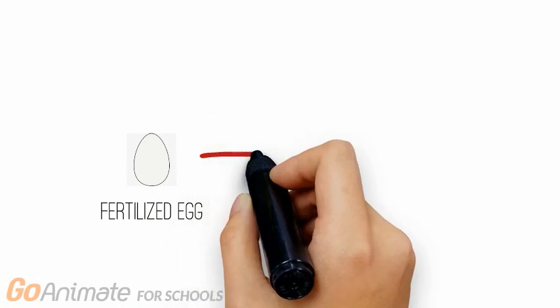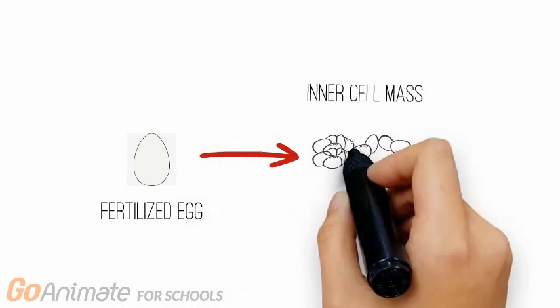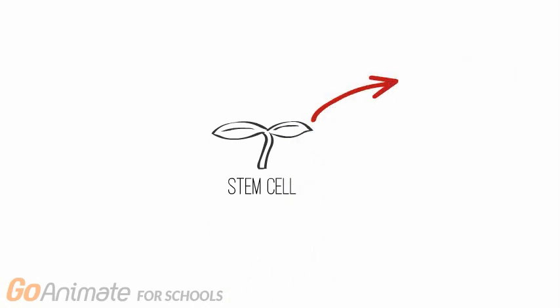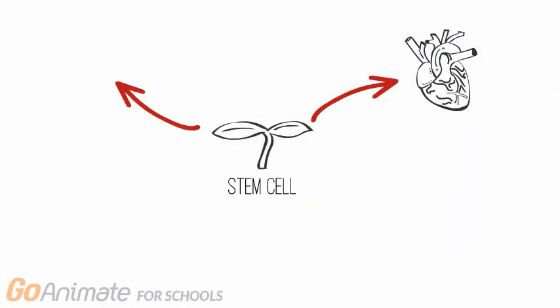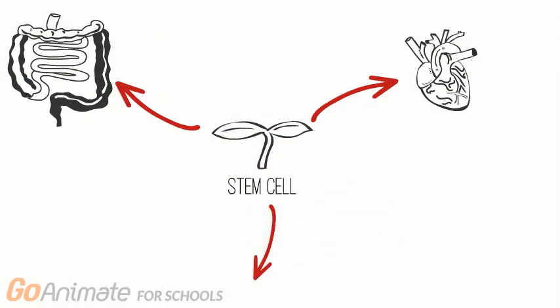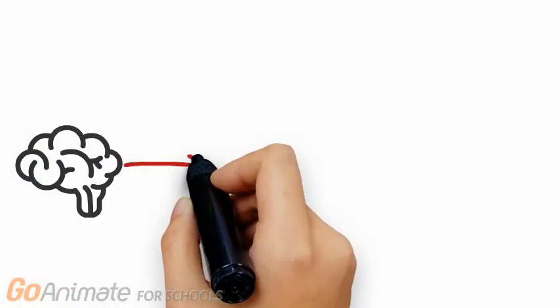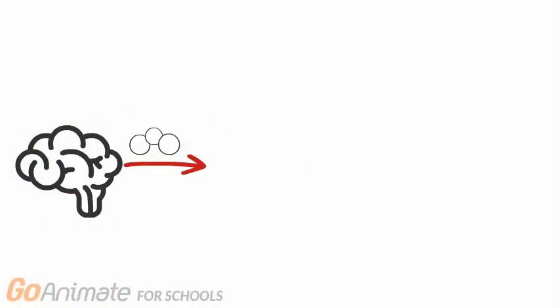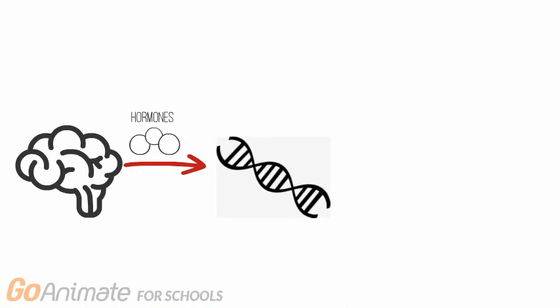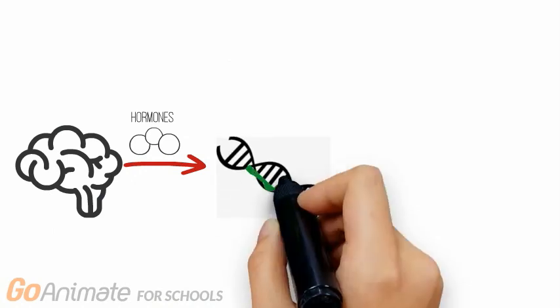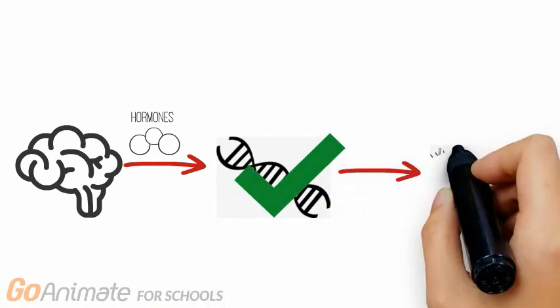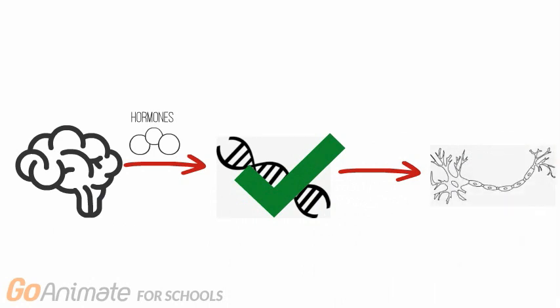Motor neurons actually develop early, soon after conception. When a fertilized egg becomes a ball of cells, it is known as the inner cell mass and it consists of stem cells that can specialize into any type of cell. Upon receiving certain chemical signals, they can begin to differentiate into cells of the nervous system. Eventually, certain hormones are released from other areas of the developing brain that cause certain genes in these neural cells to be turned on, which ensures that they are specifically developed into motor neurons.